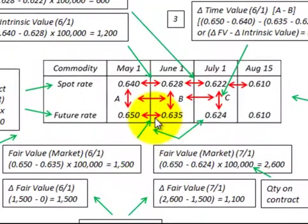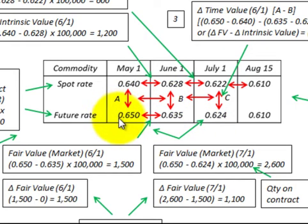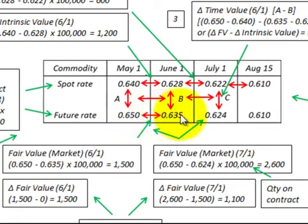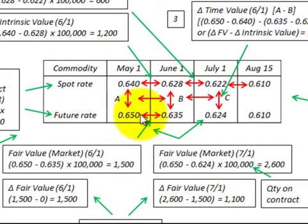To determine the change in fair value or market value of this futures contract for each period, we must first determine the fair value of the contract for each period. We do that by comparing the futures rate at the contract start date with the futures price for the period we're looking at. The fair value is based on changes in future prices over the life of the contract. Looking at our June 1st period, we compare the futures price of 0.635 with the 0.650 price at the May 1st contract start date, and we have a decline in price.